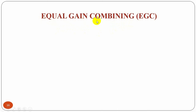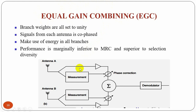The next type of receiver diversity is equal gain combining. In certain cases it is not convenient to provide the variable weighting capability required for true maximal ratio combining, so we use equal gain combining instead. Here the branch weights are set to unity, but the signals from each branch are co-phased to provide equal gain combining diversity. This allows the receiver to exploit signals simultaneously received on each branch. Performance is marginally inferior to maximal ratio combining but superior to selection diversity.